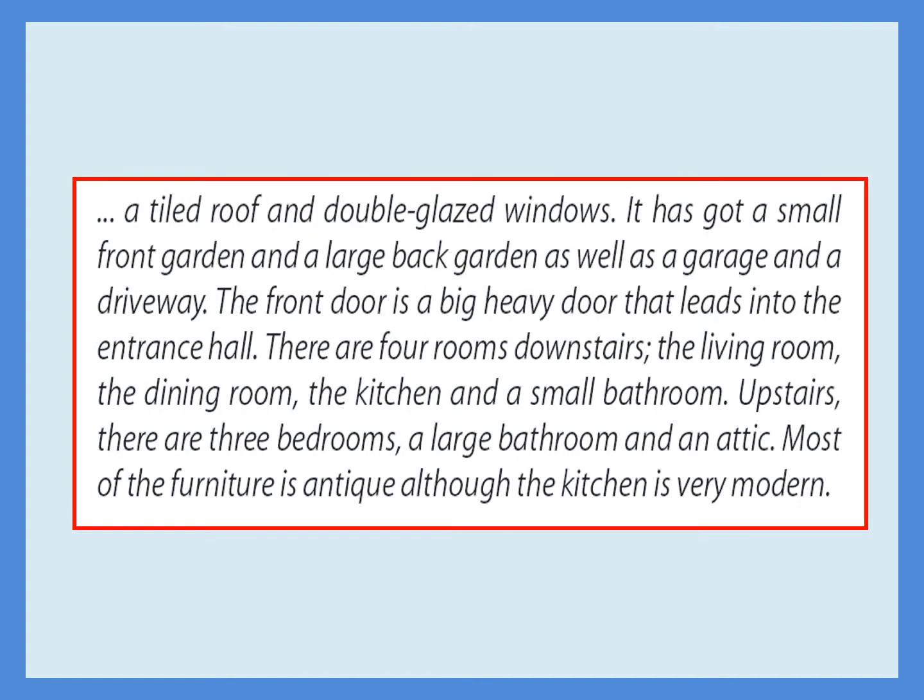Here is a short written description on how to use those words: 'A tiled roof and double-glazed windows. It has got a small front garden and a large back garden, as well as a garage and a driveway. The front door is a big, heavy door that leads into the entrance hall. There are four rooms downstairs: the living room, the dining room, the kitchen, and a small bathroom. Upstairs, there are three bedrooms, a large bathroom, and an attic. Most of the furniture is antique, although the kitchen is very modern.'